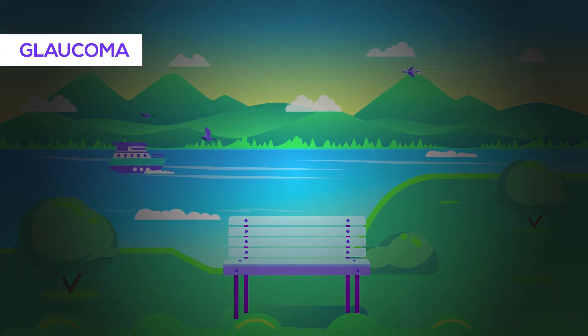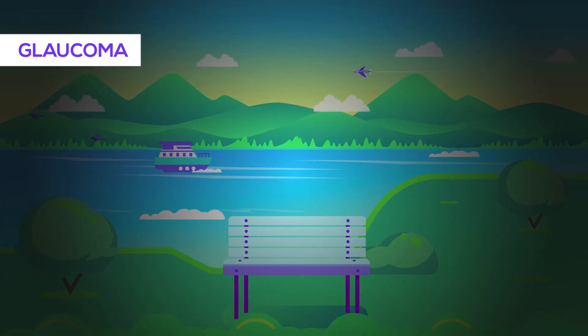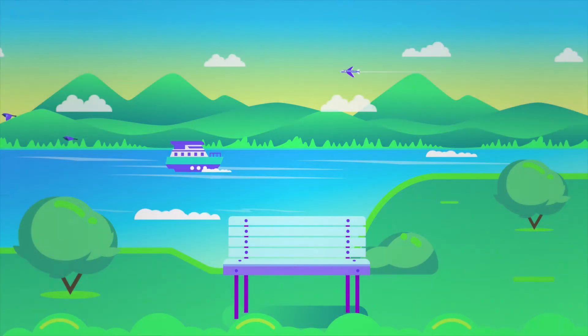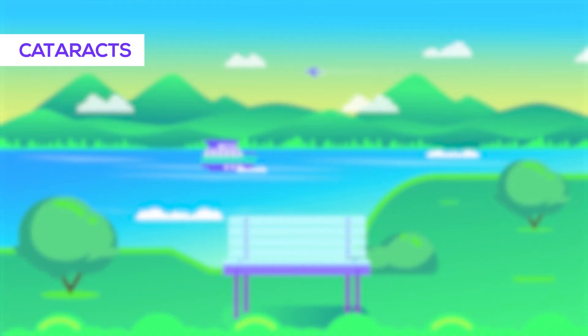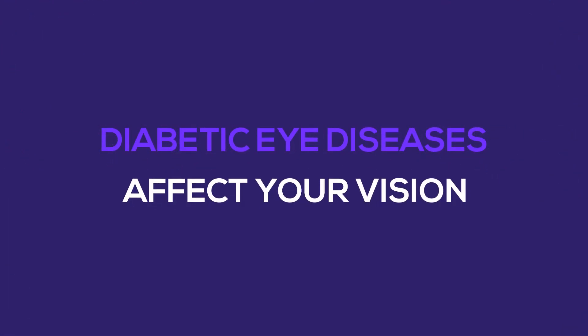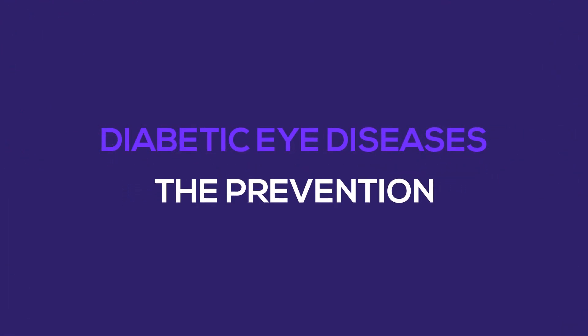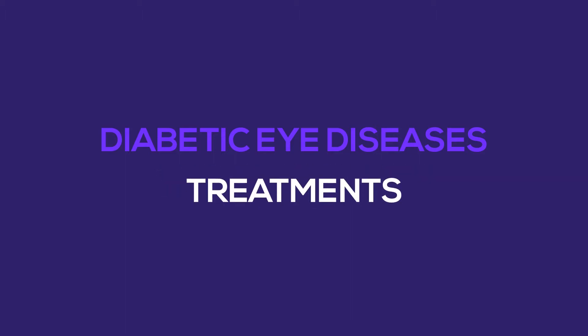This is how a patient with glaucoma sees the world when they slowly lose their peripheral vision. And sometimes diabetes can make your visual field cloudy and faded because of cataract formation. Our topic today is diabetic eye diseases, and we'll discuss how diabetes can affect your vision, the prevention, diagnosis, and treatments.